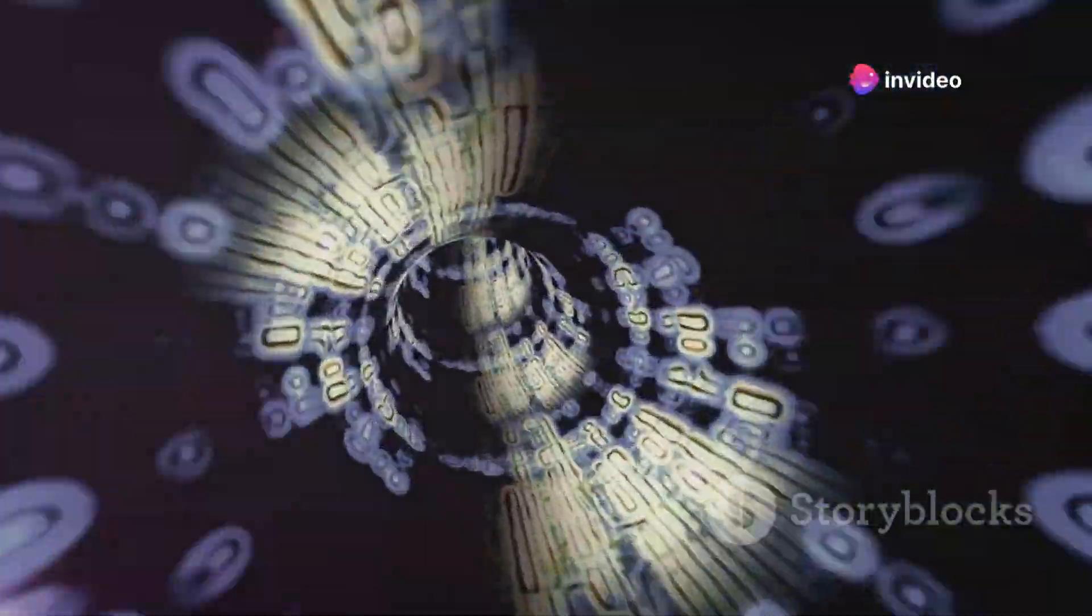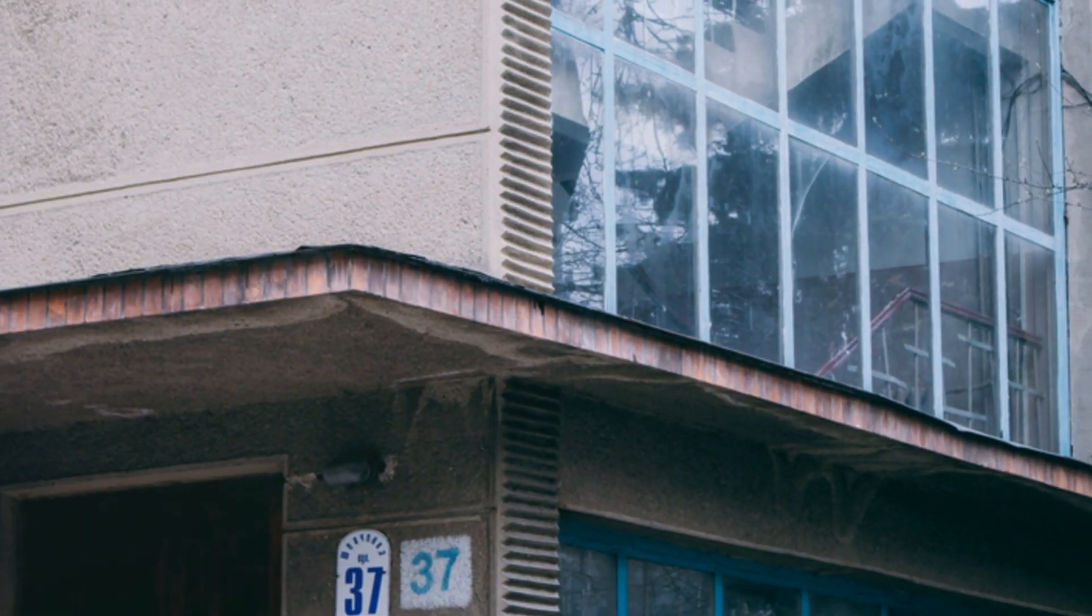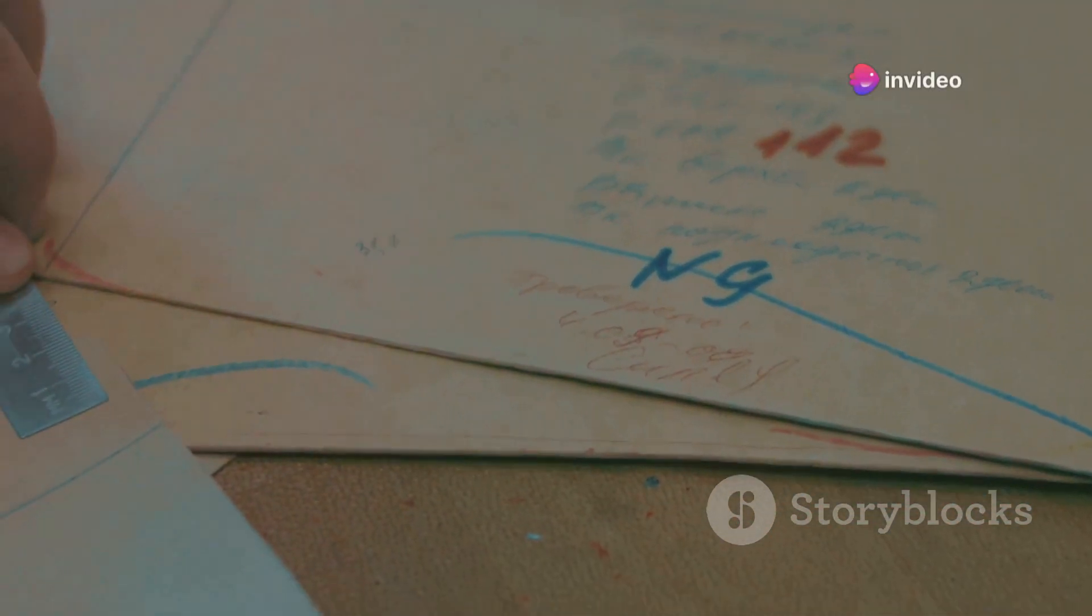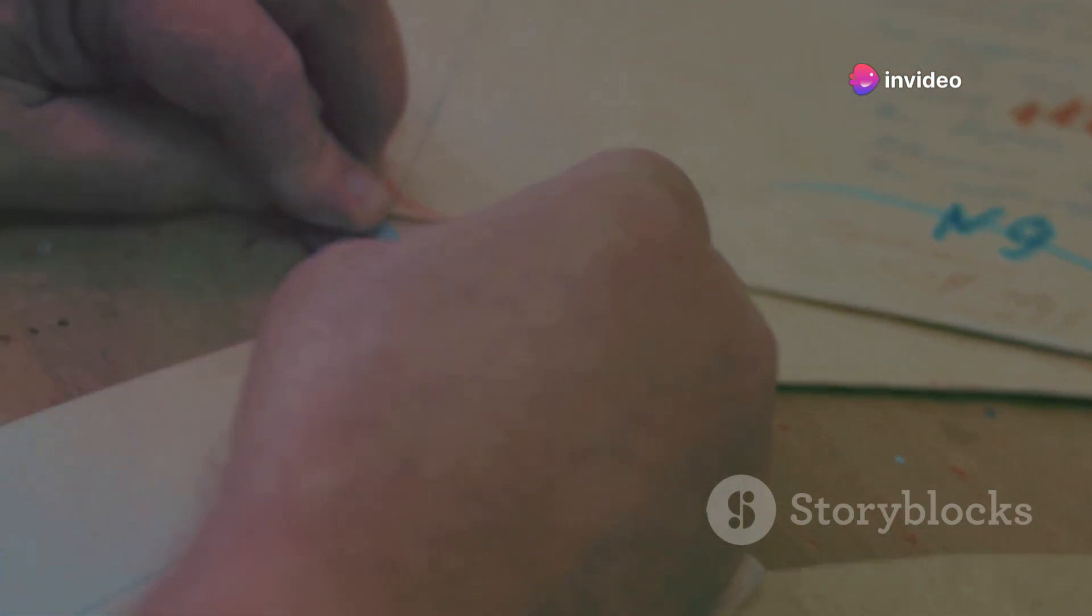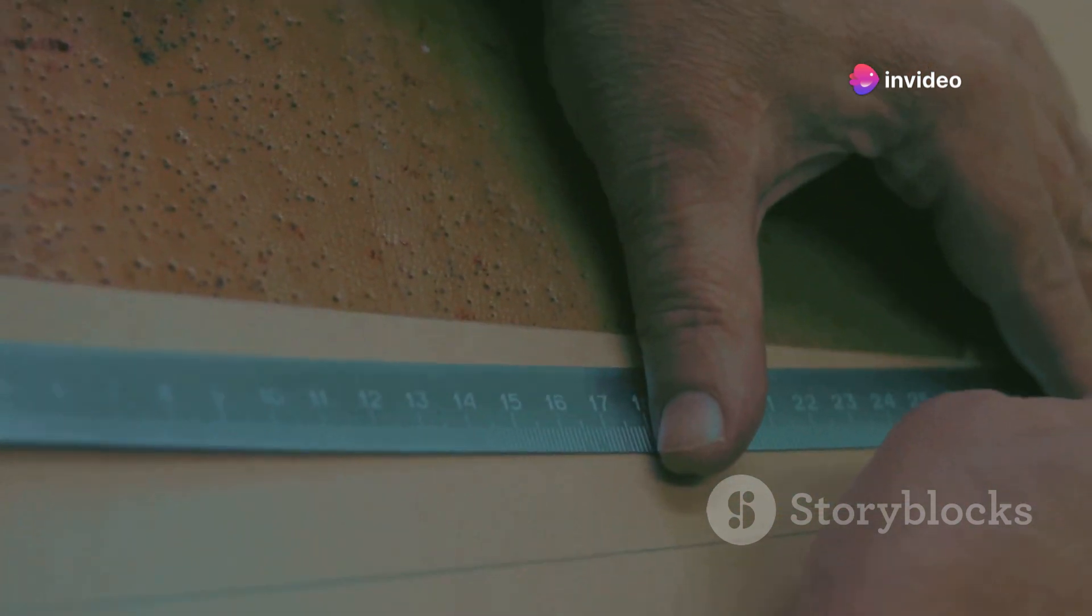Have you ever noticed the number 37 popping up in unexpected places? It seems to have a way of showing up when you least expect it. It might be a house number you pass by every day, a page in a book that catches your eye, or even a significant date on a calendar that holds personal meaning.